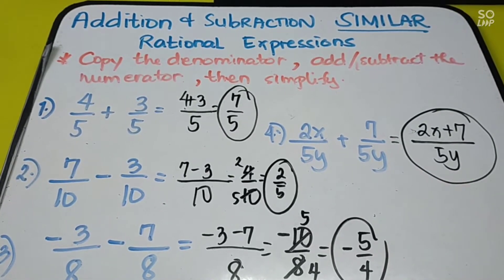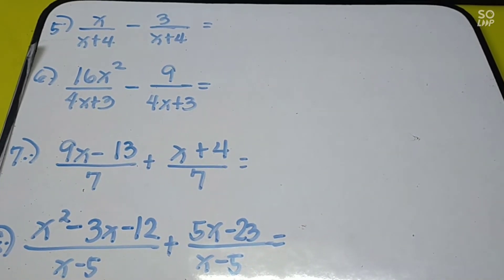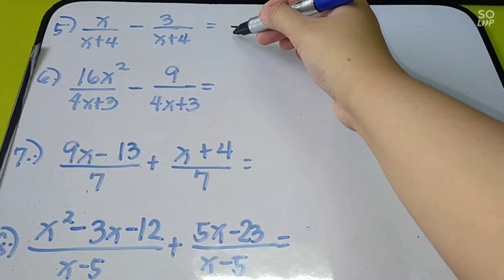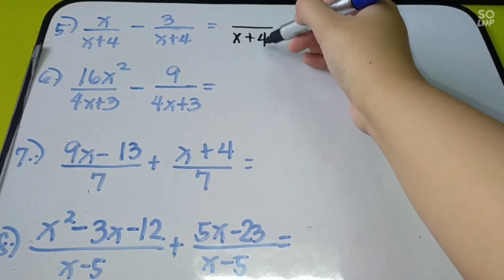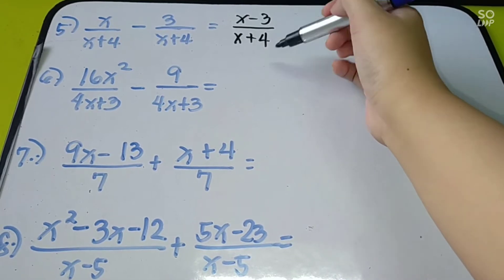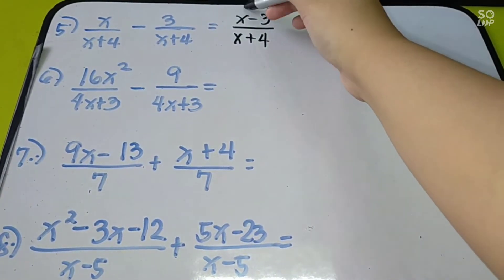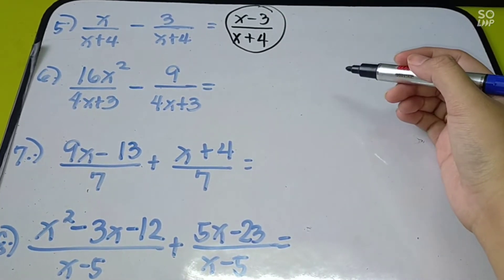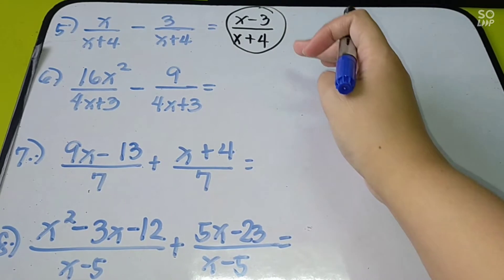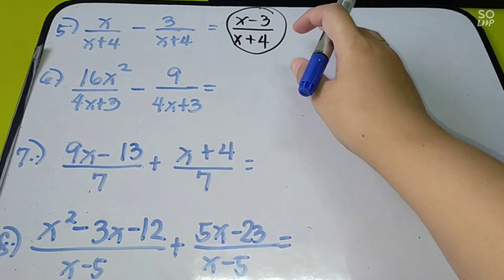Let us have more examples. Number 5. Same denominator again. We are going to copy the denominator, which is x plus 4. Then combine to get x minus 3. Since there is nothing to factor here, that is your answer. Take note: you cannot cancel x because there is an operation in between. So this is your final answer.